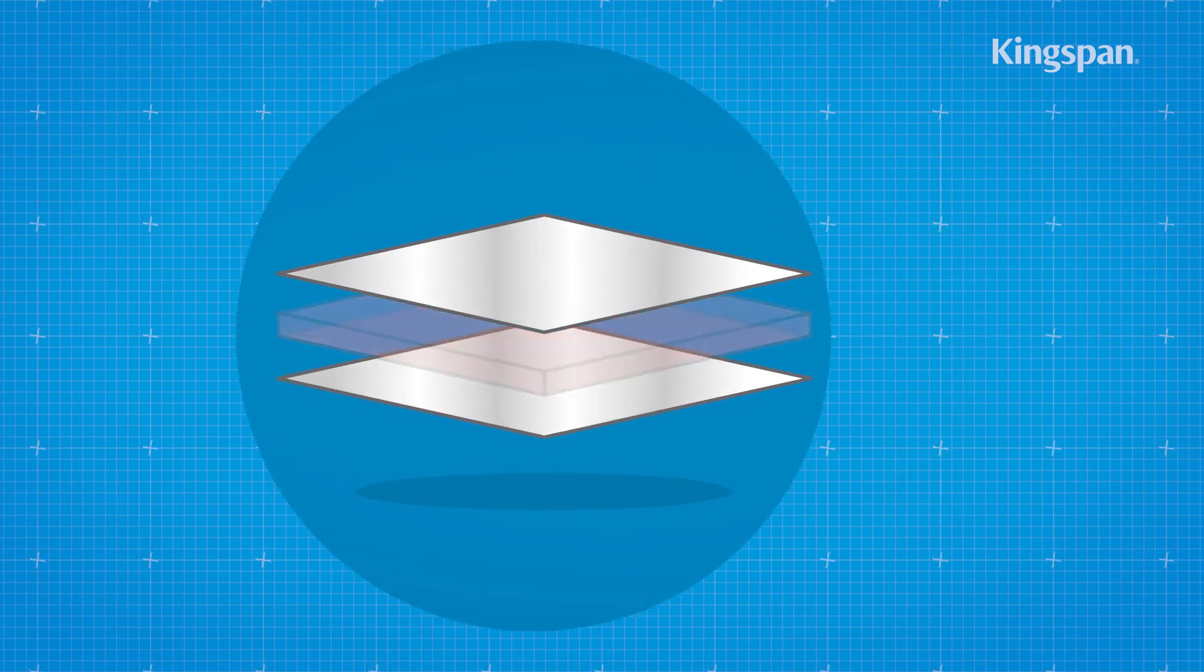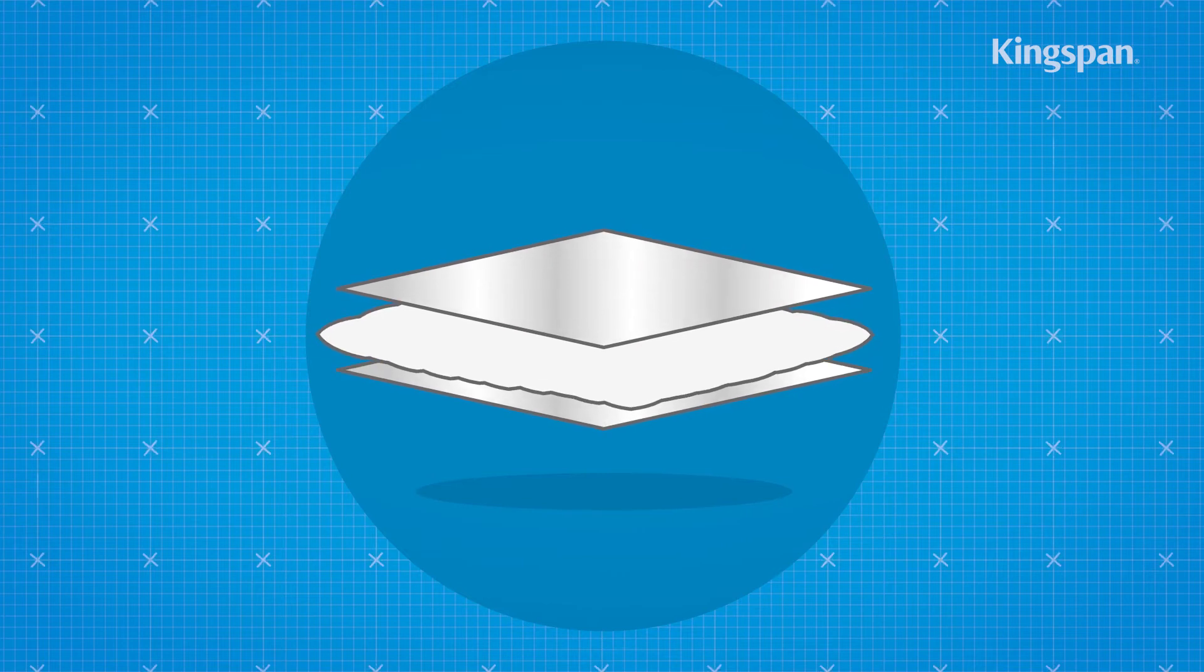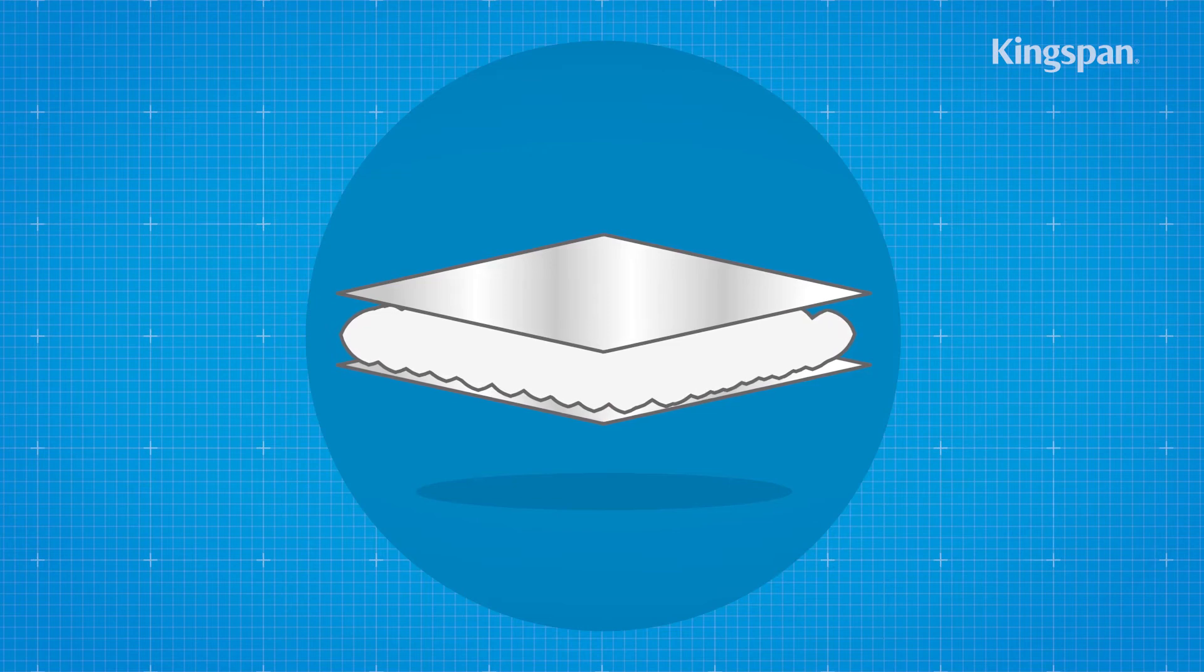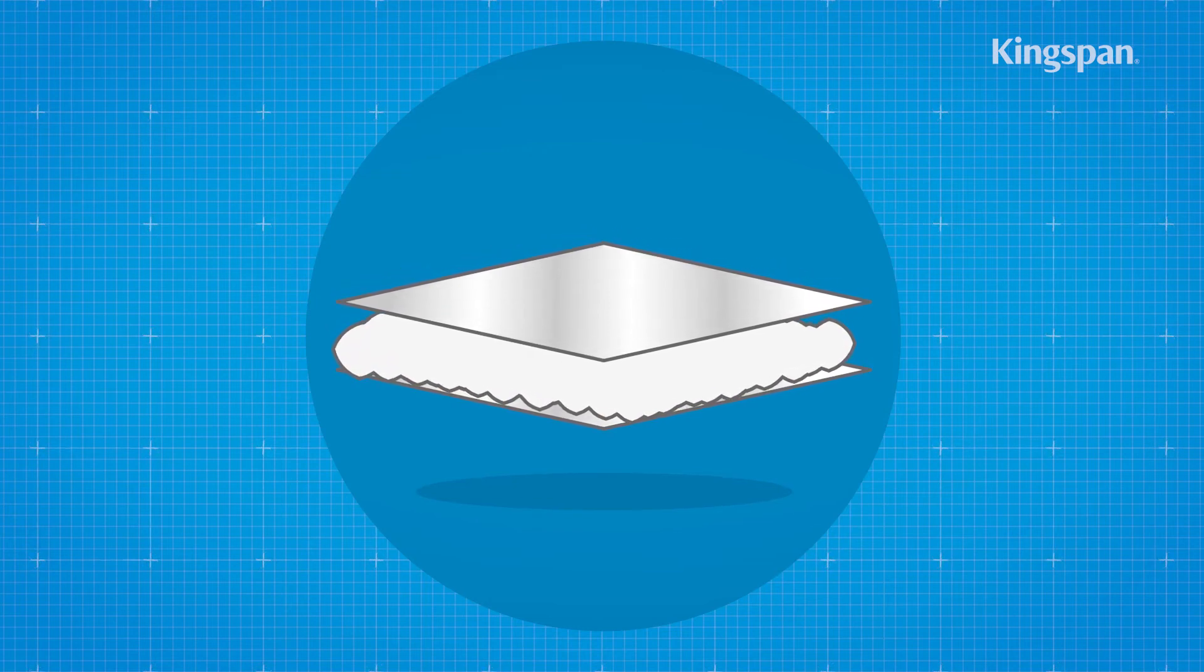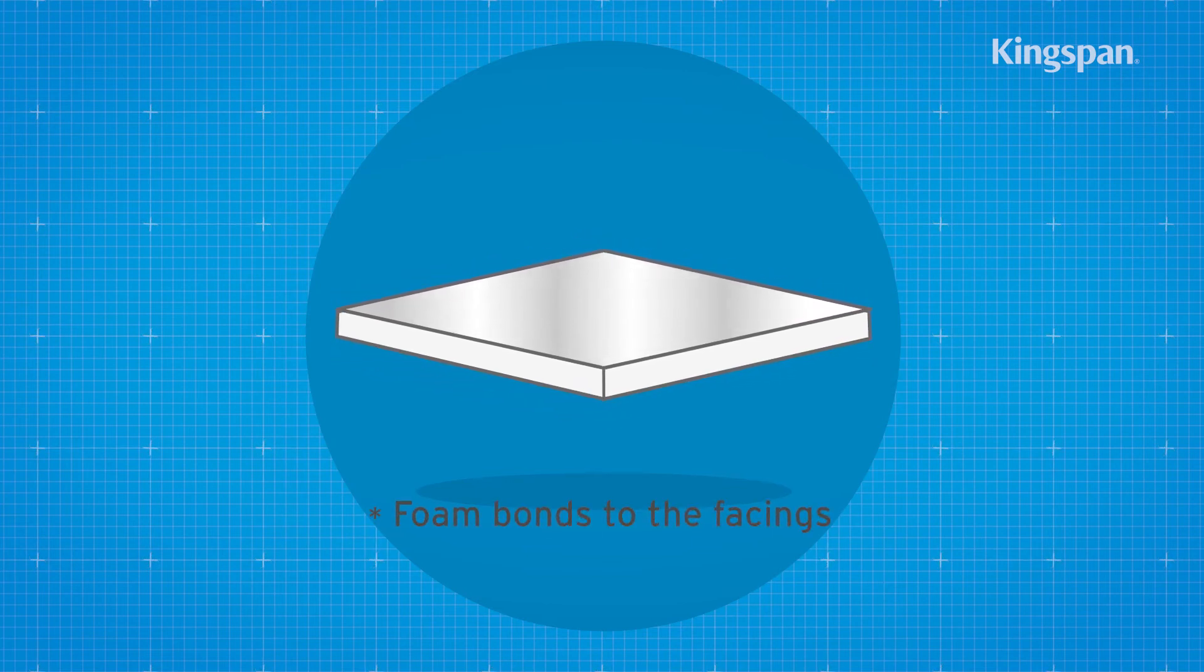At the start of the process, a wet foam insulation mix is added directly to the bottom layer of facing. It then expands to meet the top layer. As it dries, the foam becomes tacky and adheres itself to the facing, top and bottom.